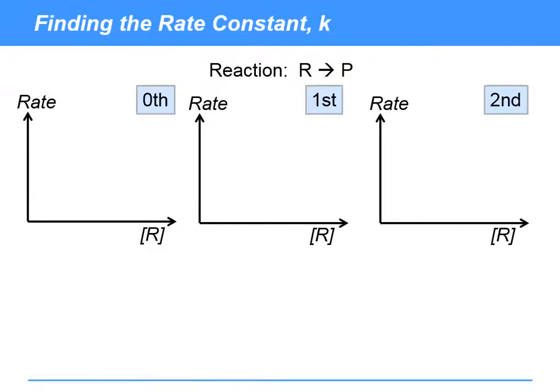We're going to remind ourselves of what the rate concentration plots would look like for different orders of the reaction. Remember if we've got reactants going to products, the rate equation for this is rate equals K times concentration of R to the power n.